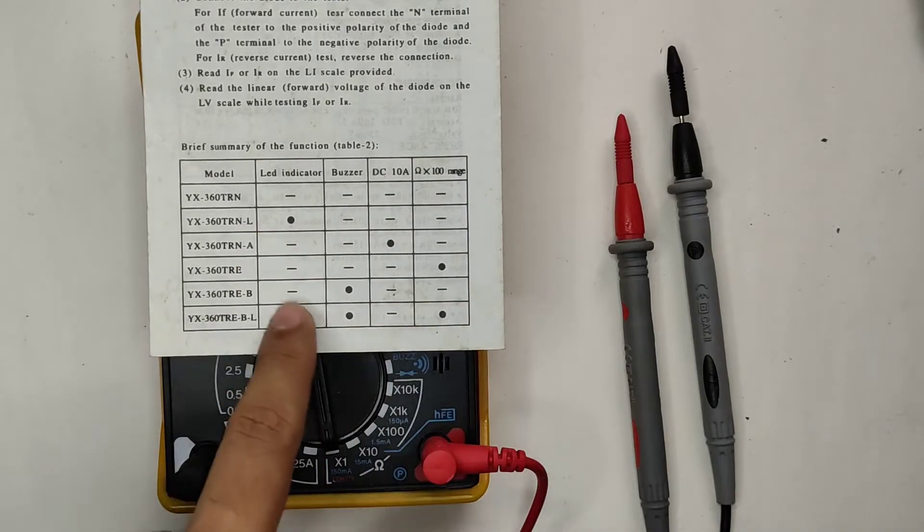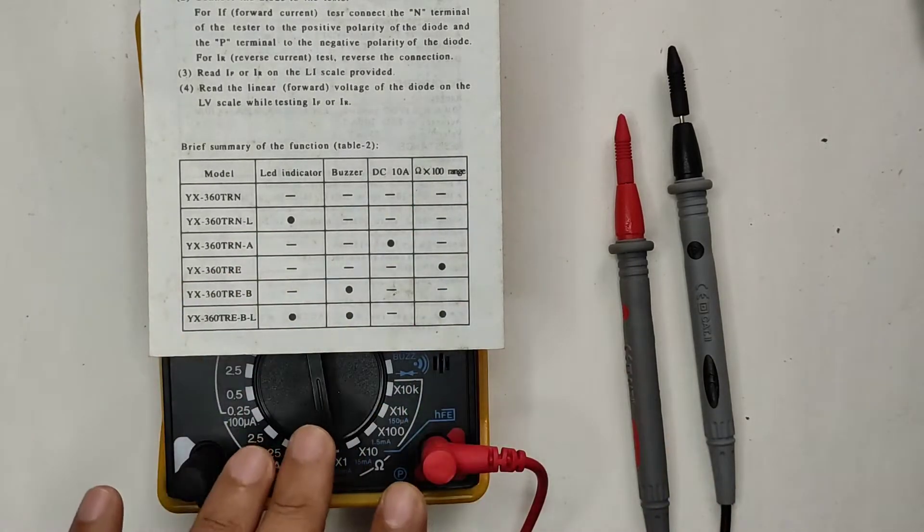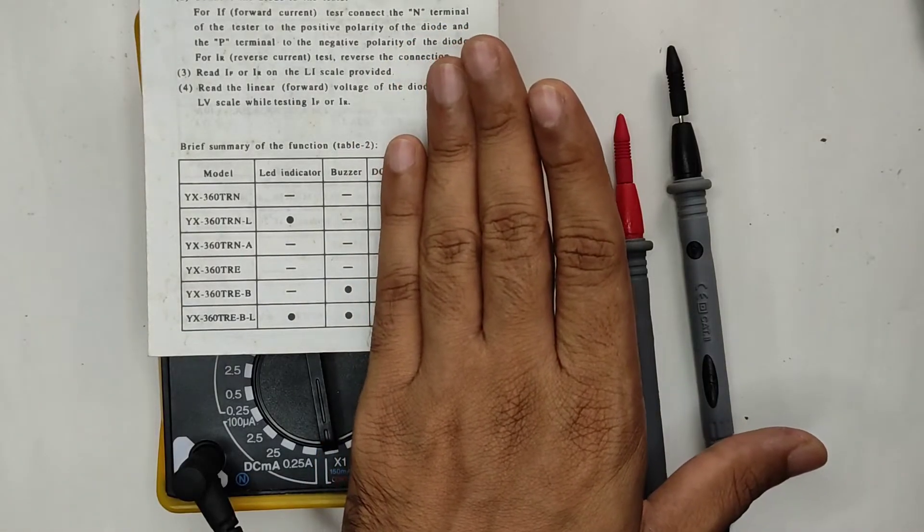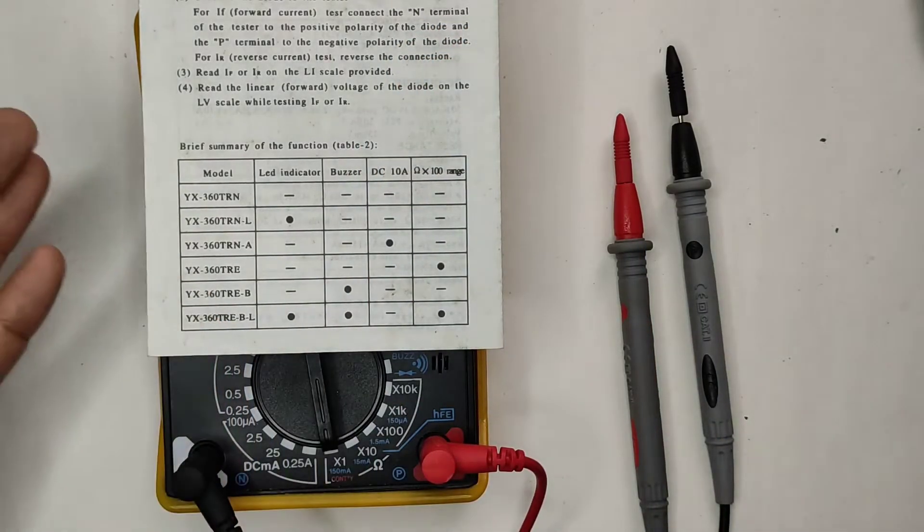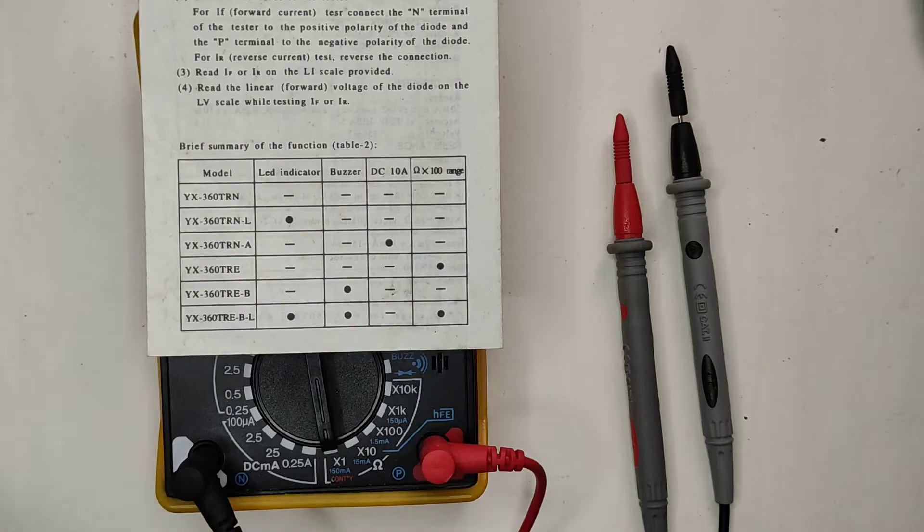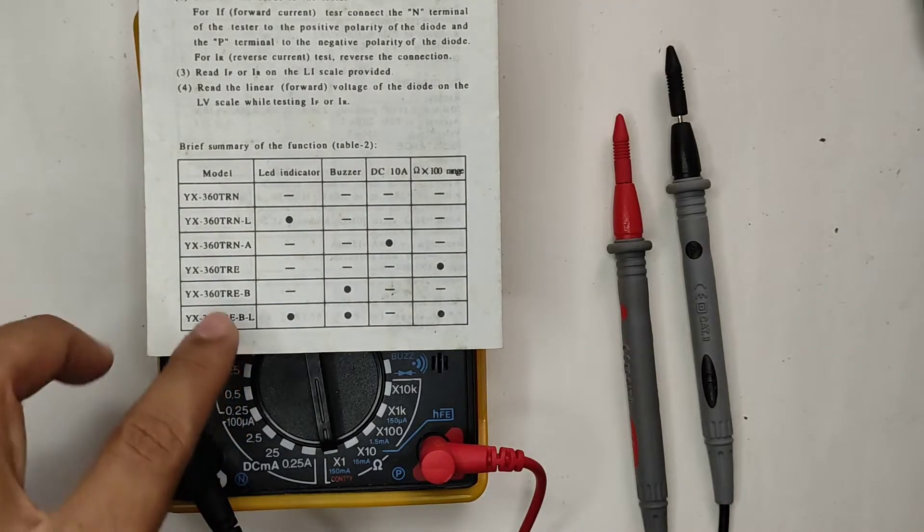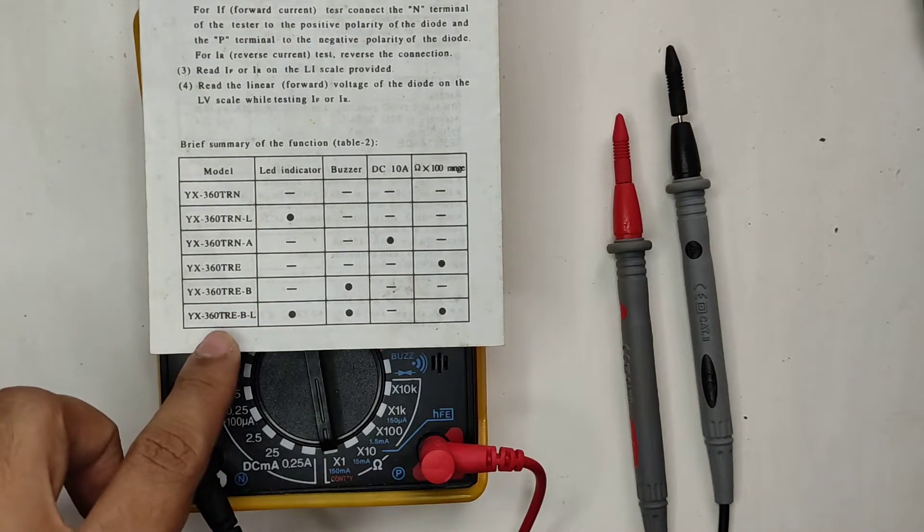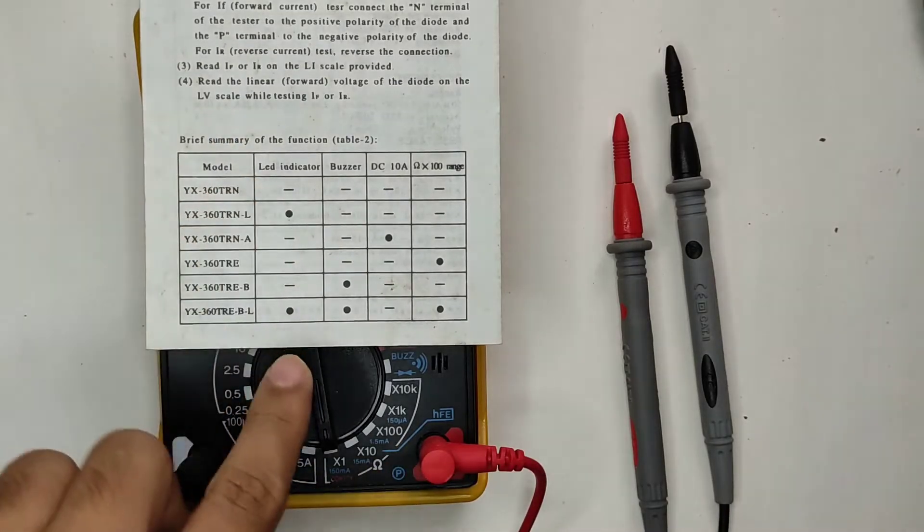You can see it has the option for buzzer and no LED indicator. These things are also not present which we don't care about right now. What I'm going to do in this video is to convert the TREB to the TREBL because we can add that LED indicator you can see.